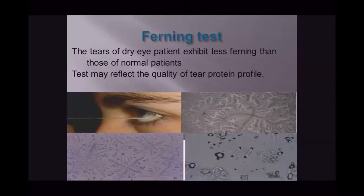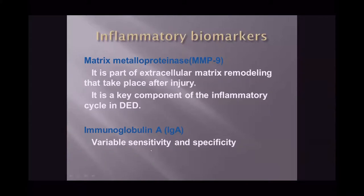In the ferning test, tears from dry eye patients show less ferning than those from normal patients because the protein level is very low, reflecting the quality of the tear protein profile. Inflammatory biomarkers in tear film can also be assessed — MMP (matrix metalloproteinase) is a key component of the inflammatory cycle in dry eye disease, and IgA can be assessed by ELISA, though it has variable sensitivity and specificity.